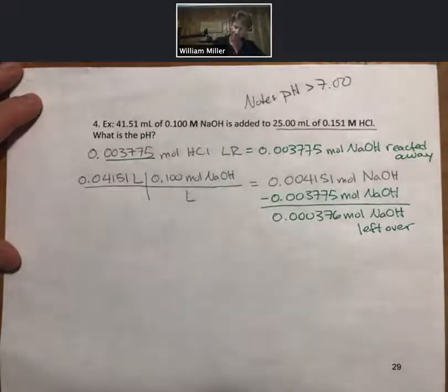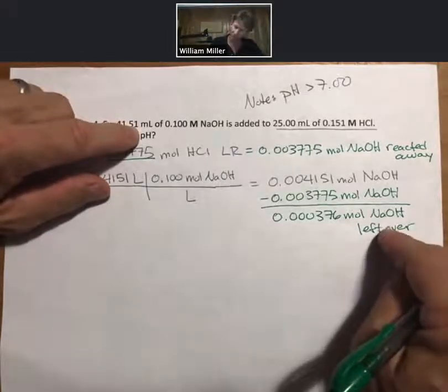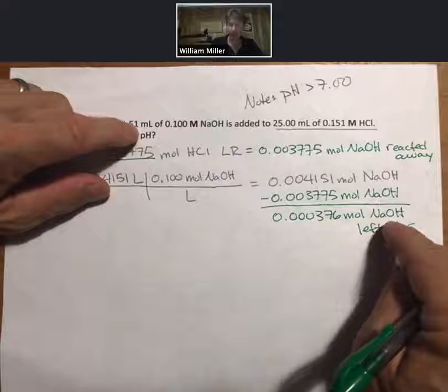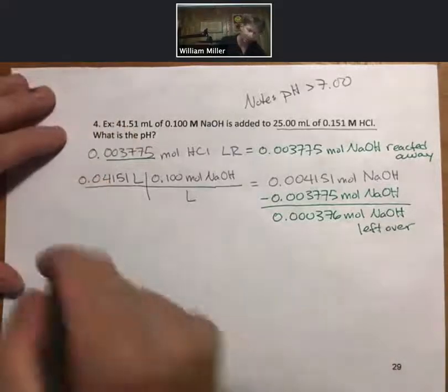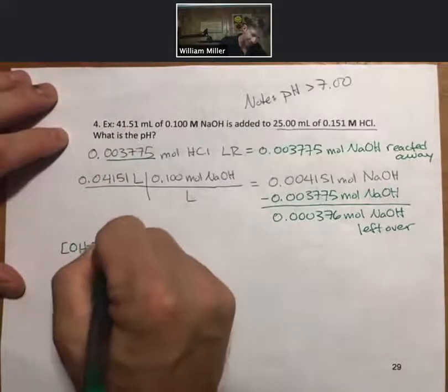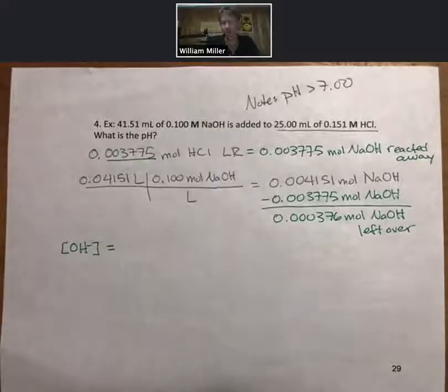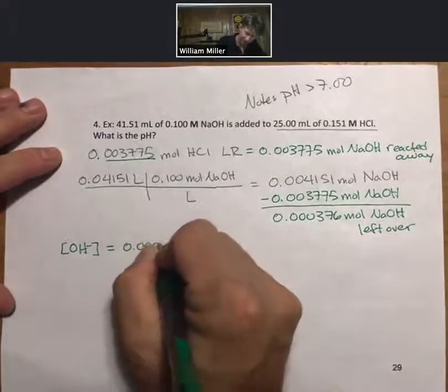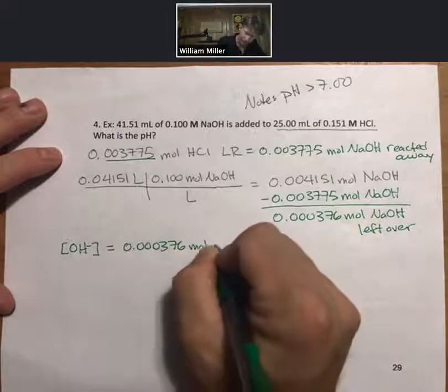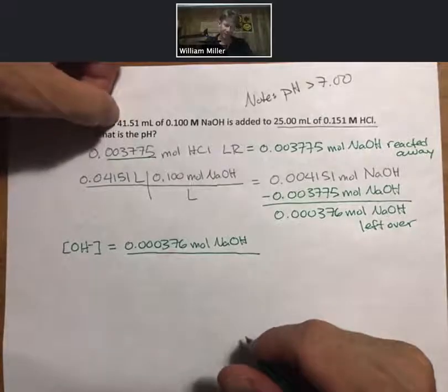Set that aside for a minute. Now, we're looking for the pH. We know that we have moles of sodium hydroxide. So our hint here is that I'm going to go and use the moles of sodium hydroxide to calculate the concentration of sodium hydroxide. Because pH always deals with the concentration of hydrogen ion or the concentration of hydroxide ion. And these two things are always related. I know my moles of sodium hydroxide.